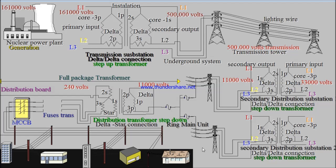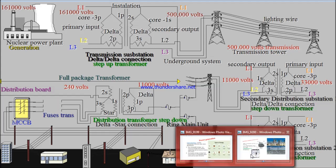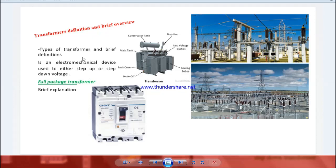Let me remind you that one transformer is a backup of the other. Now we are at the distribution transformer step-down, which is part of the full package transformer. Let's go back to the transformer definitions. A transformer is an electromechanical device used to either step up or step down voltage. This transformer is used at generation, this one at transmission, and this one at distribution level — these are the small transformers you can see in town.